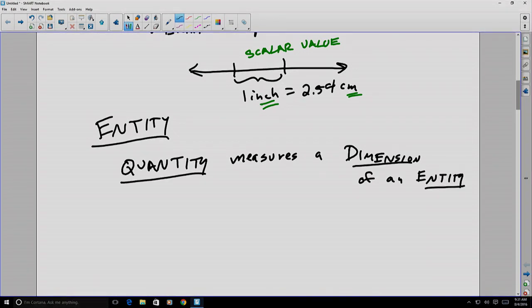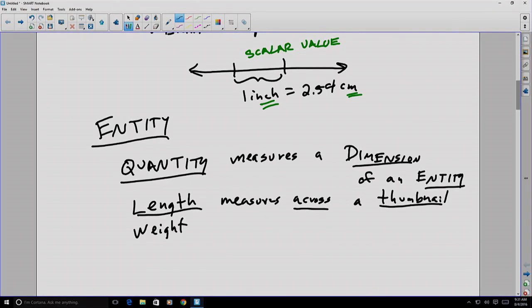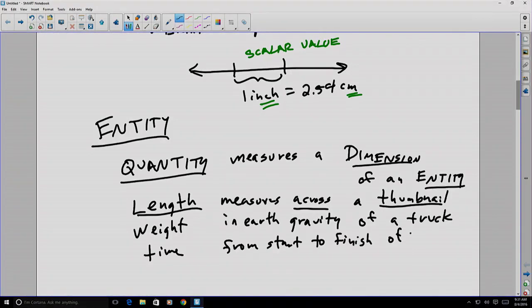Let's consider some examples. Length is a quantity that measures across, that would be a dimension, a thumbnail. That would be the entity that we'd be measuring. Weight might be a quantity in Earth's gravity of a truck. The truck is the entity. And finally, time from start to finish of a swim race. The details about the dimension of the start to finish and the entity is the swim race.